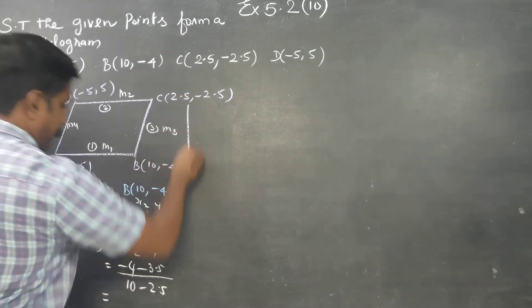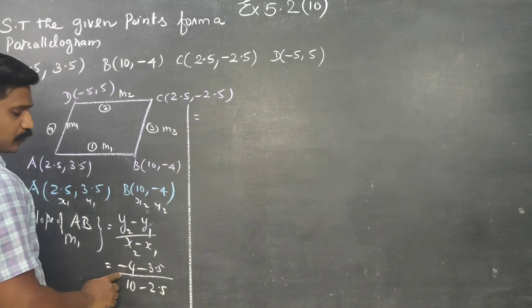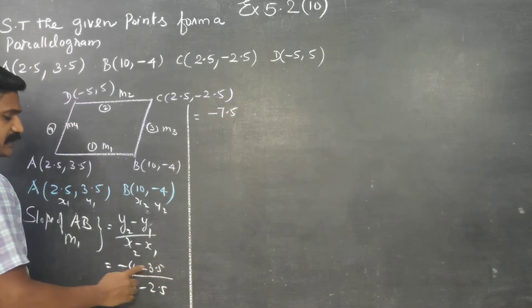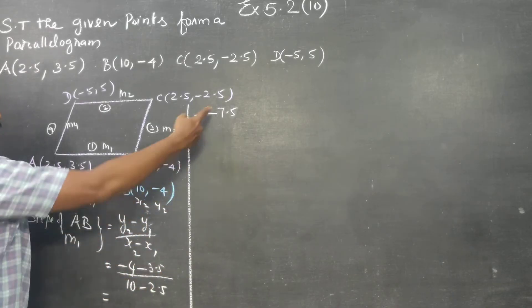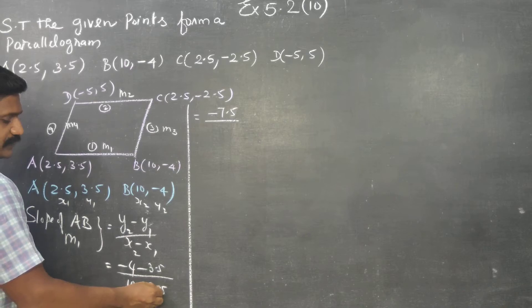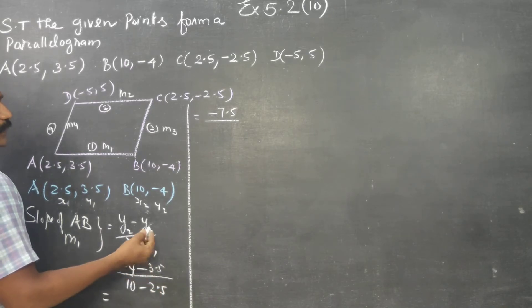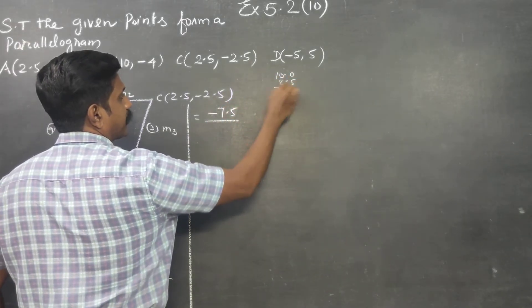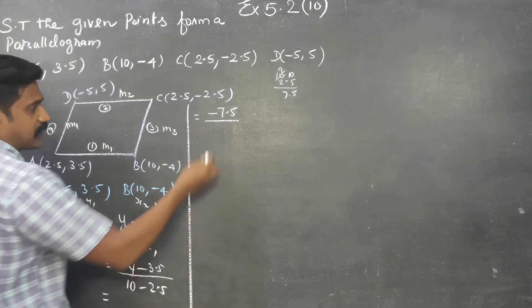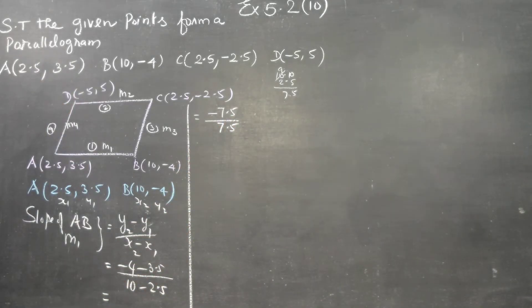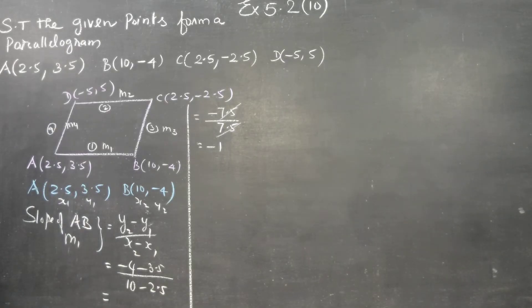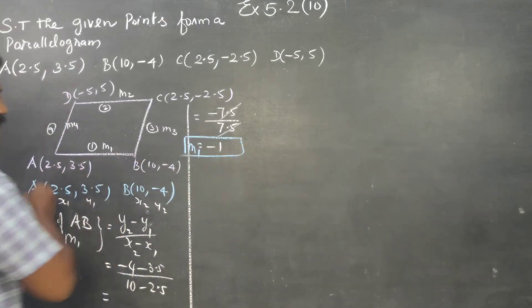Minus 4 minus 3.5 gives minus 7.5. Divided by 10 minus 2.5 gives 7.5. So minus 7.5 divided by 7.5. This is my M1.